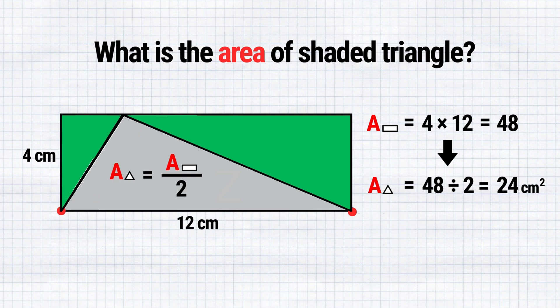Such a manipulation demonstrates that the green area is equivalent to the gray one. Therefore, the area of the gray triangle is exactly half of the rectangle's area.